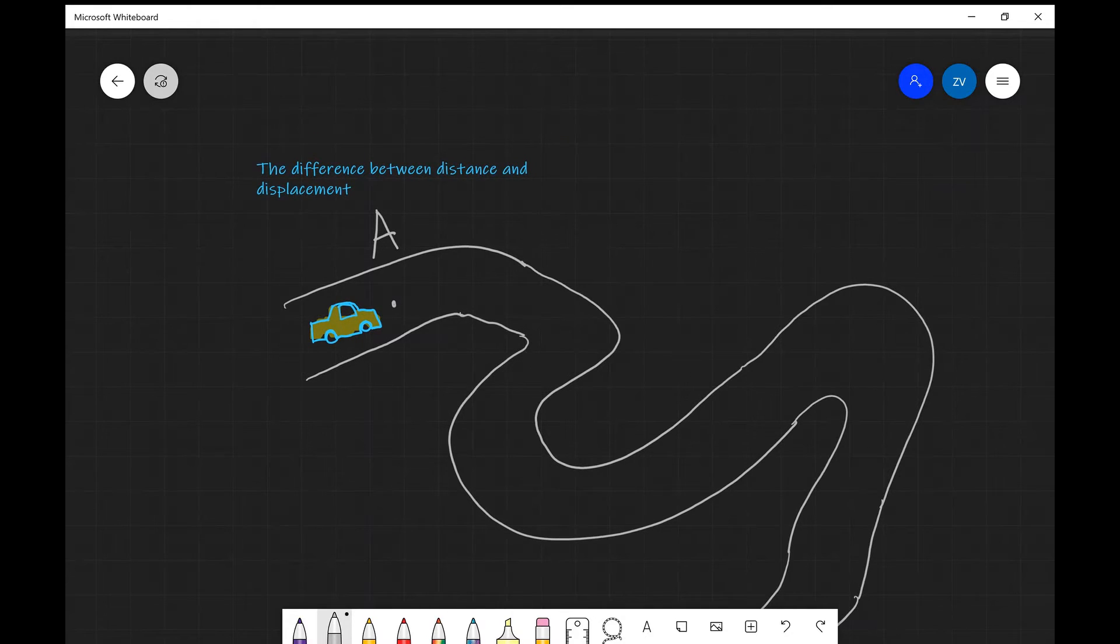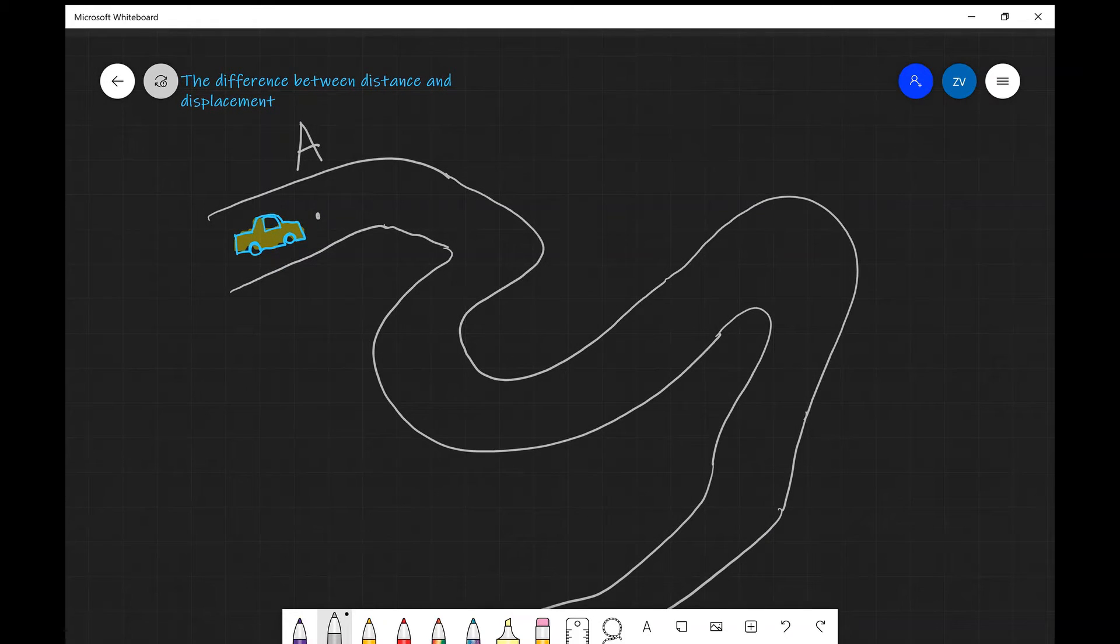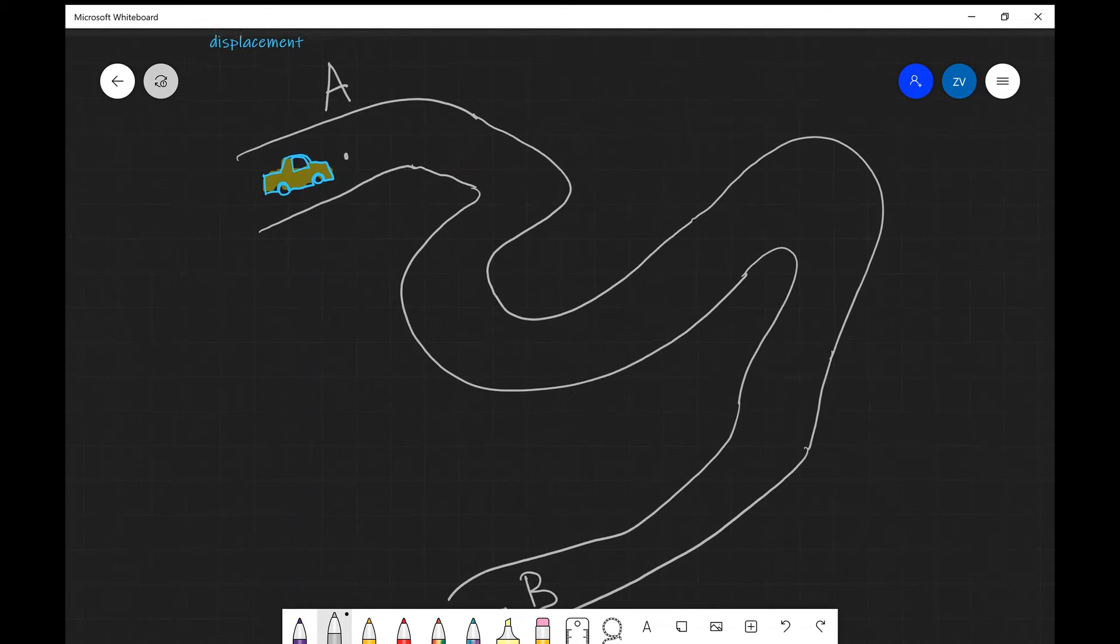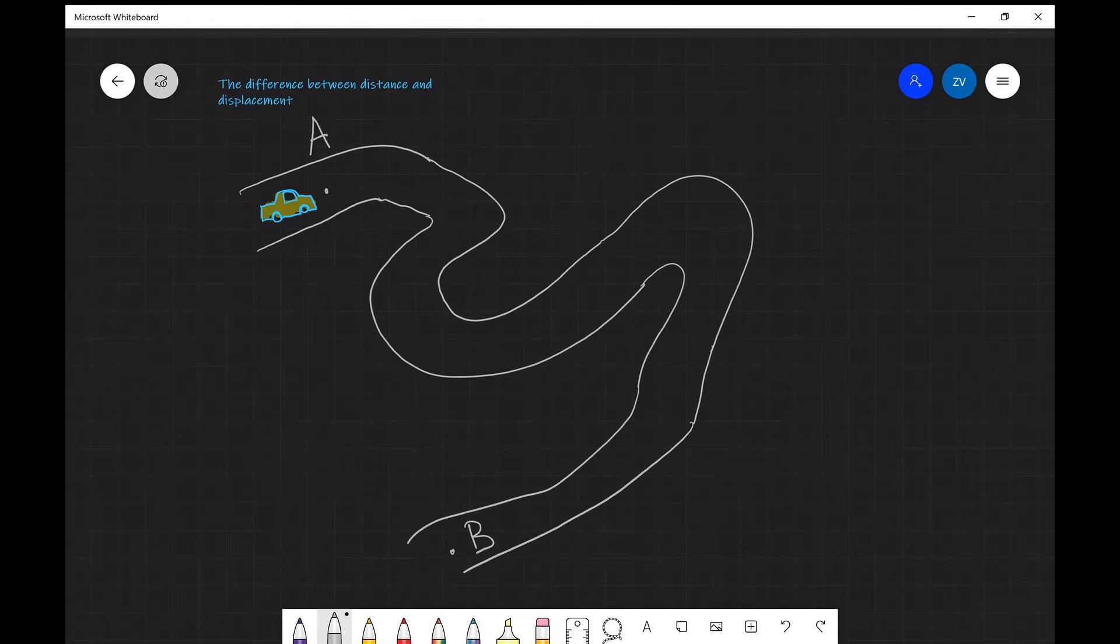Let's imagine that we have a car that takes this road and follows this road along and goes from point A to point B. The distance will be the length of the path that this car has traveled all the way along here. In other words, if we were to take the length of this arc the car is passing through, this will be the distance traveled. It will be the number of meters in this case that the car has traveled.